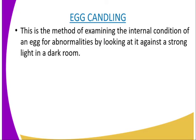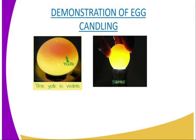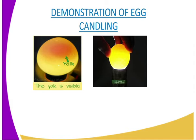Egg candling refers to the method of examining the internal condition of an egg for abnormalities by looking at it against a strong light in a dark room. As demonstrated here, we have the yolk visible there. You can use a source of light like a torch — in the diagram, a torch below is lit, illuminating all parts of the egg.